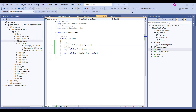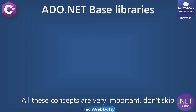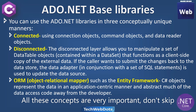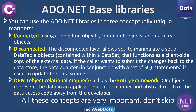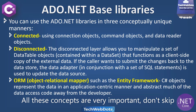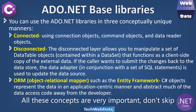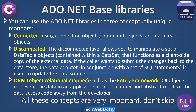ADO.NET based libraries are a very important part of Entity Framework Core because everything is based on them. You can use ADO.NET libraries in three conceptually unique manners. The first is the connected mode — the old way — using connection objects, command objects, and data reader to perform any operation on the database: read, insert, update, or delete.